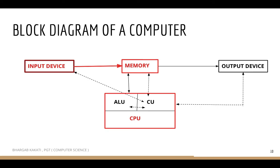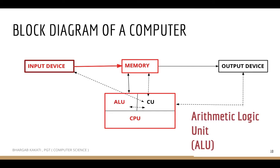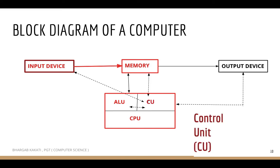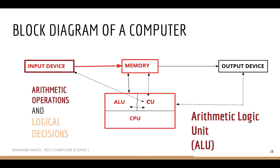There are three parts of the CPU, but in the block diagram we generally show two. The CPU is responsible for the overall working of the computer, just like our brain is responsible for the overall working of the human body. The two main parts shown are the ALU — Arithmetic Logic Unit — and the CU — Control Unit. The ALU is responsible for performing arithmetic operations like addition, subtraction, multiplication, and division, and for taking logical decisions such as comparisons like greater than or less than.